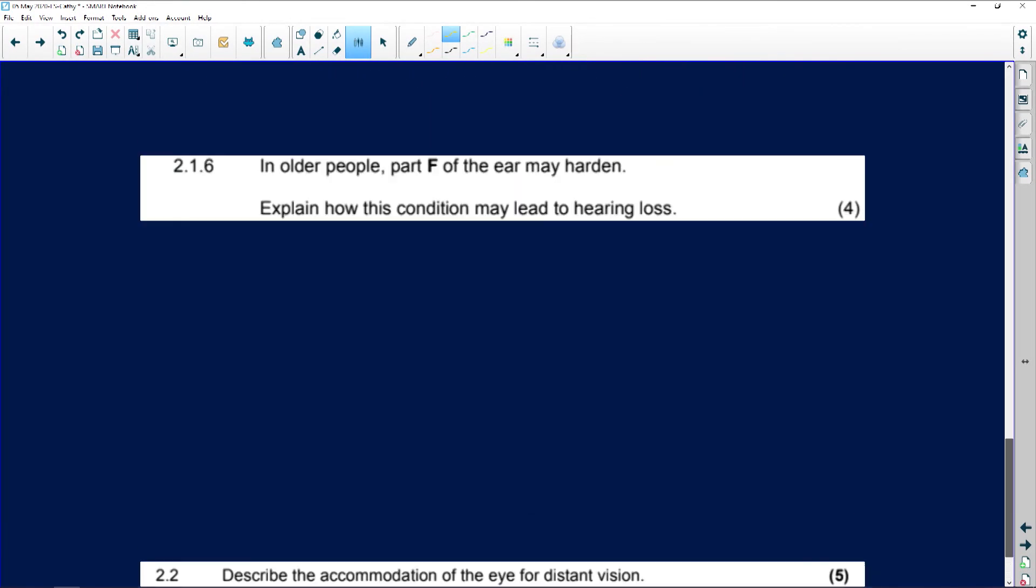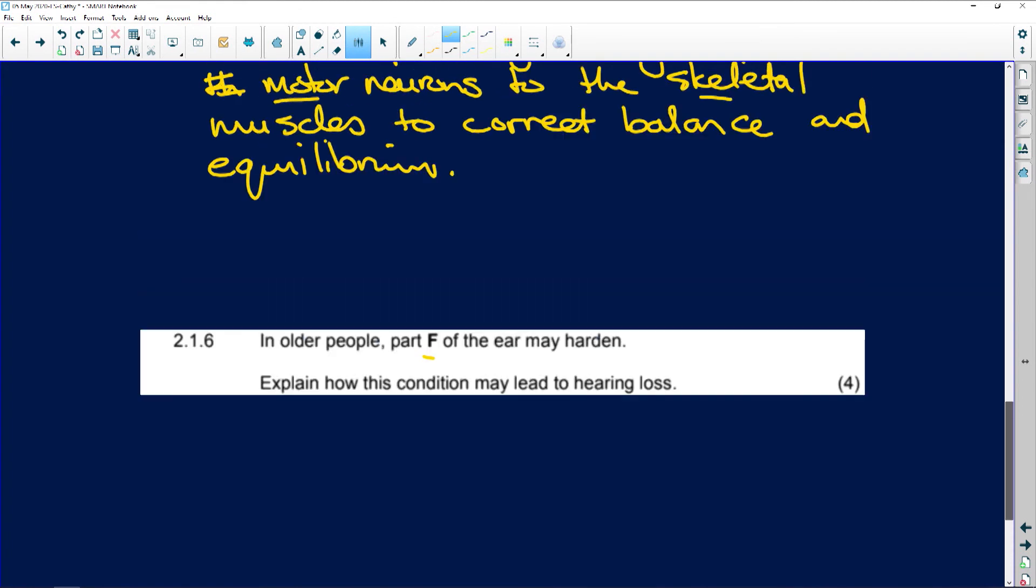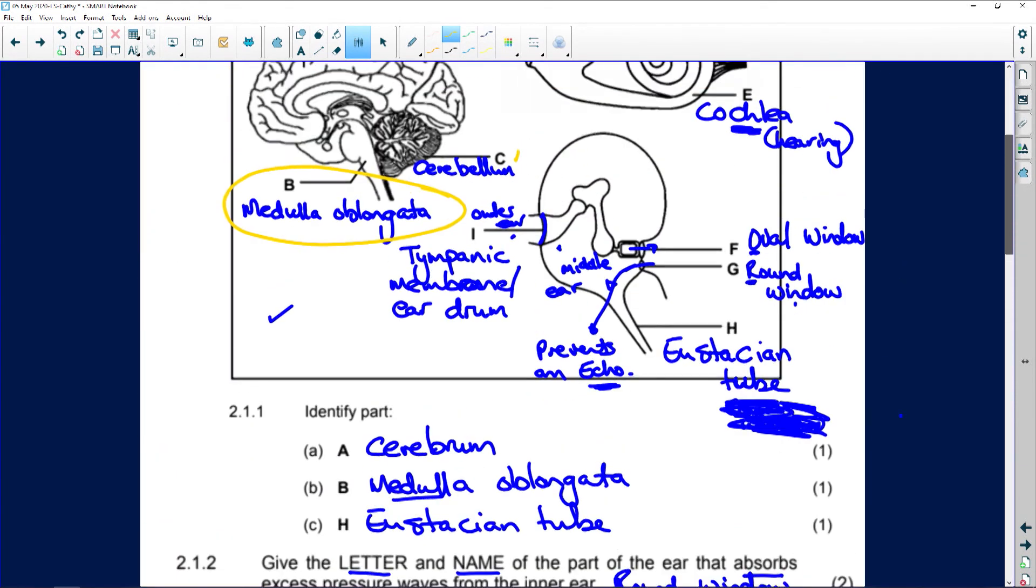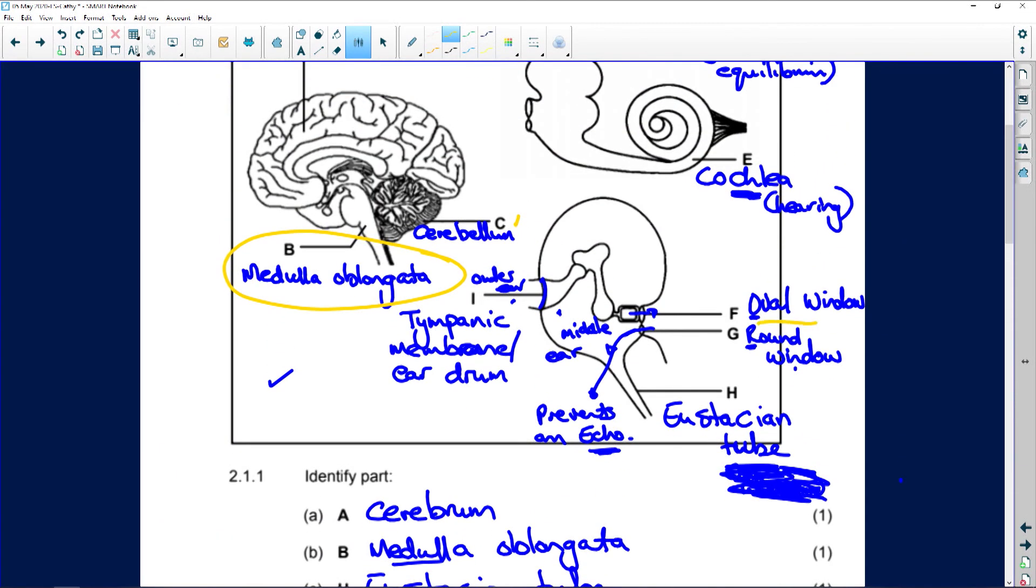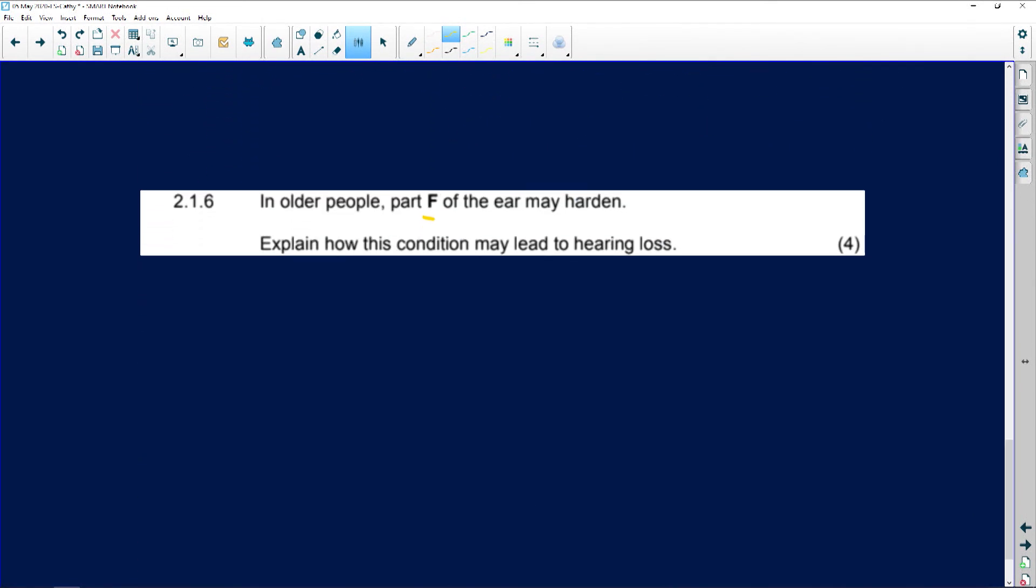So the next question here. In older people, part F of the ear may harden. So let's just quickly check what part F was. Part F is the oval window. So in older people, part F is going to harden. Explain how this condition will lead to hearing loss. Oh, well, that's easy.